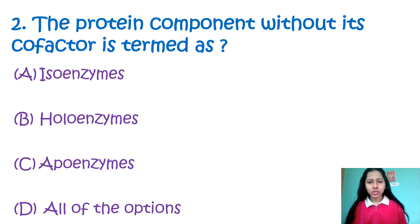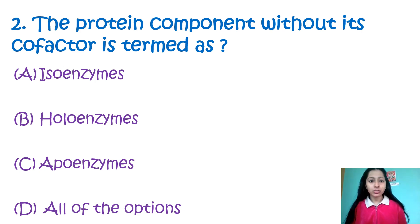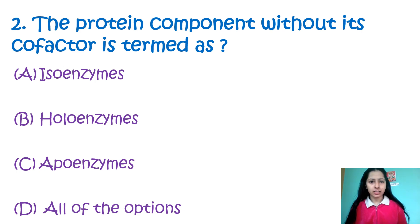Question number 2: The protein component without its co-factor is termed as — Option A: isoenzyme, Option B: holoenzyme, Option C: apoenzyme, Option D: all of these. Isoenzyme is the enzyme that differs in amino acid sequences but catalyzes the same chemical reactions. Holoenzyme is a protein component with its co-factor. So my correct option is apoenzyme, that is a protein component without its co-factor — option number C.